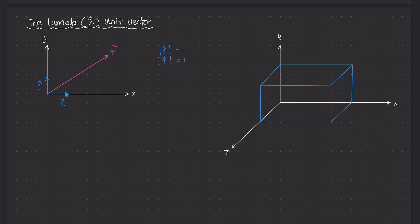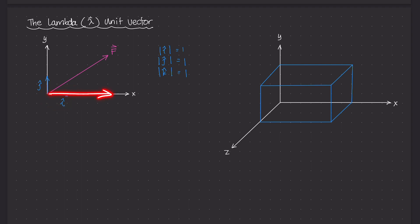When we get into three-dimensional space, we have a third component — the z-axis. The unit vector we use for the z-axis is k, and that also has a unit magnitude of one. They're all unit vectors. Now these unit vectors indicate the direction of those force components. So i indicates the direction of the Fx component, and j indicates the direction of the Fy component.